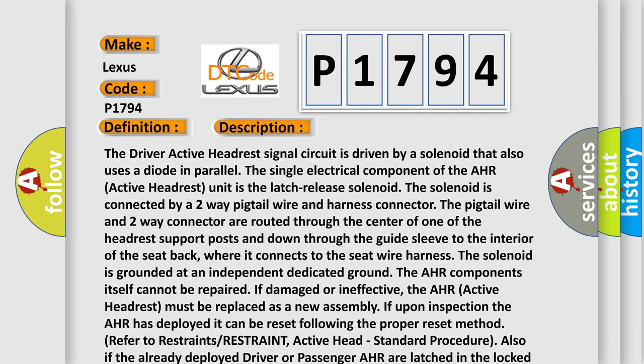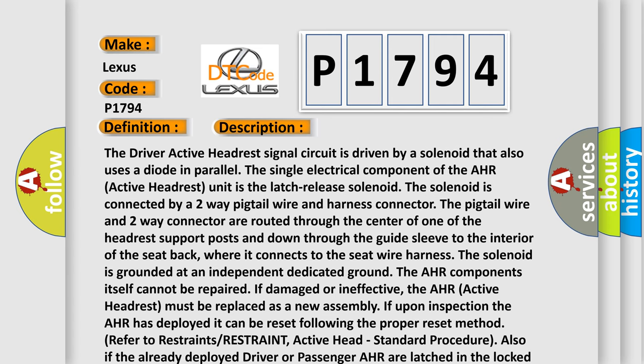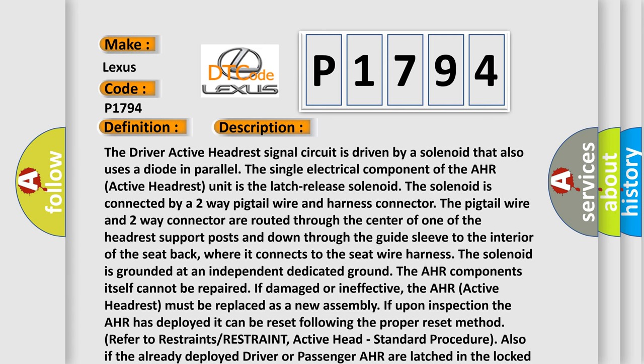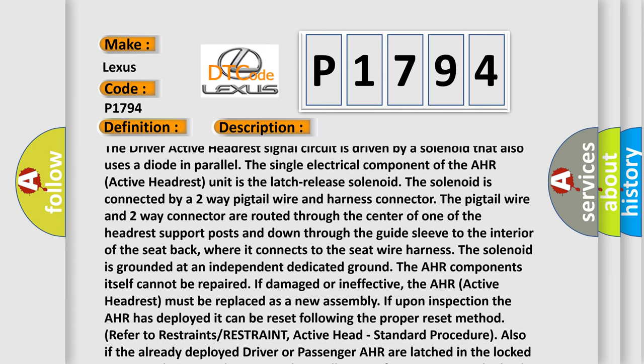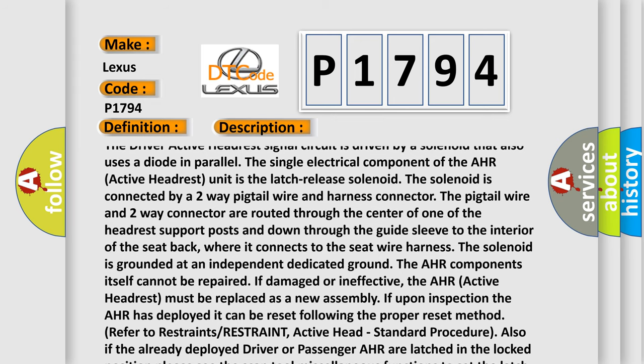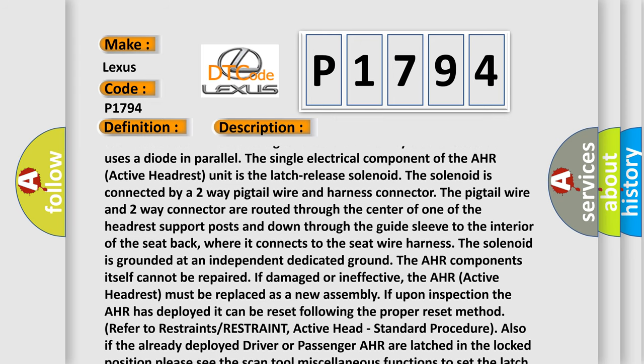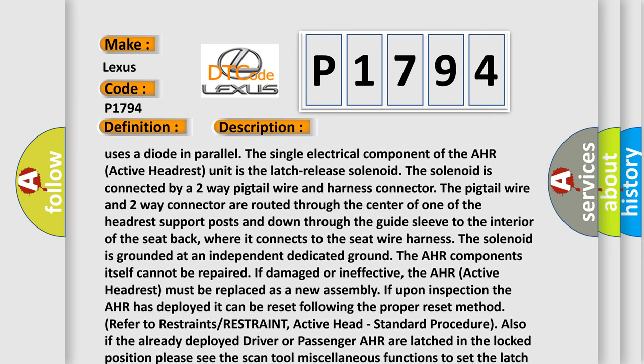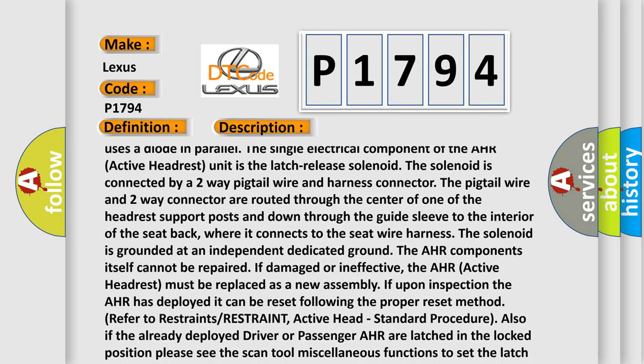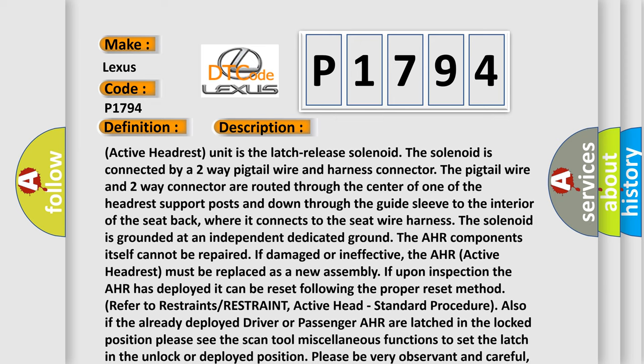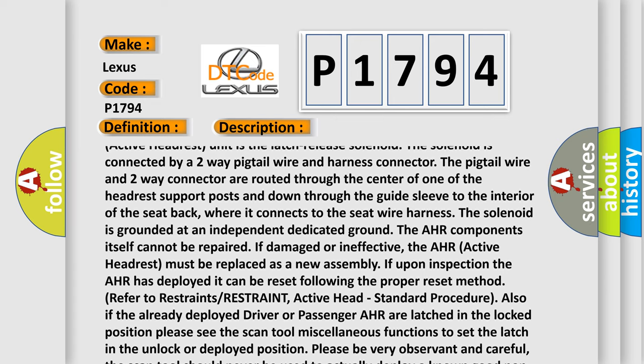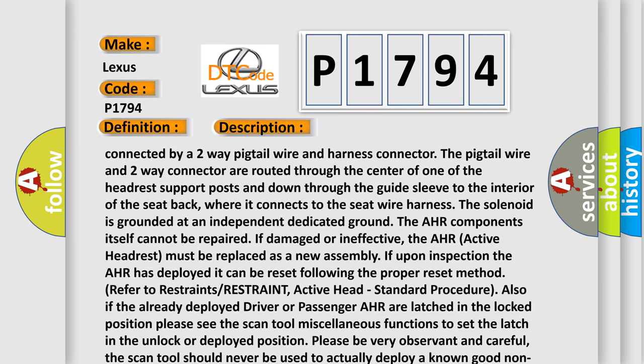The driver active headrest signal circuit is driven by a solenoid that also uses a diode in parallel. The single electrical component of the AHR active headrest unit is the lateral solenoid. The solenoid is connected by a two-way pigtail wire and harness connector. The pigtail wire and two-way connector are routed through the center of one of the headrest support posts and down through the guide sleeve to the interior of the seat back, where it connects to the seat wire harness.